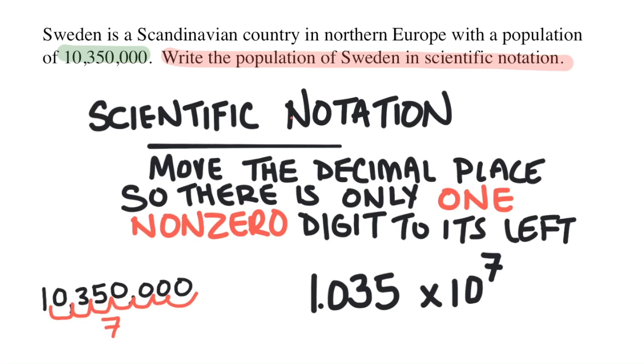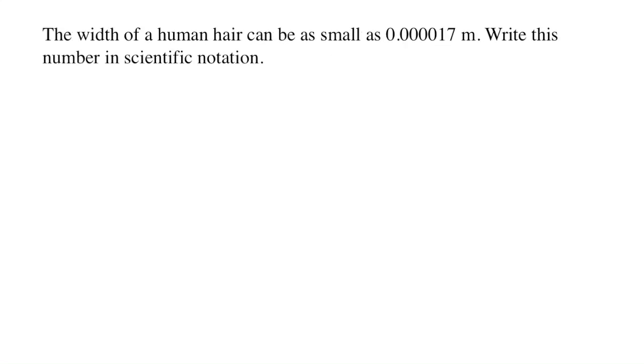Try one more to make sure you got it, this time with a really small number. The width of a human hair can be as small as 0.000017 meters. Write this number in scientific notation.